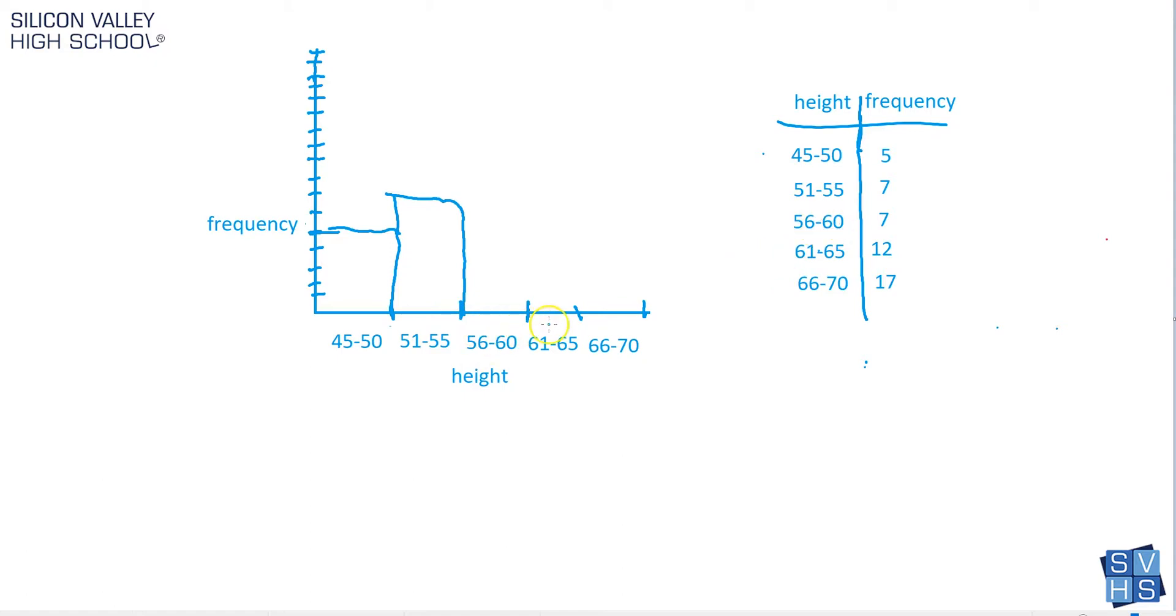Okay, the next one, 56 to 60. Again, seven, right here. And already you're starting to see why this is better than looking at these values. This is totally like you can walk by, glance at a chart, and quickly understand.